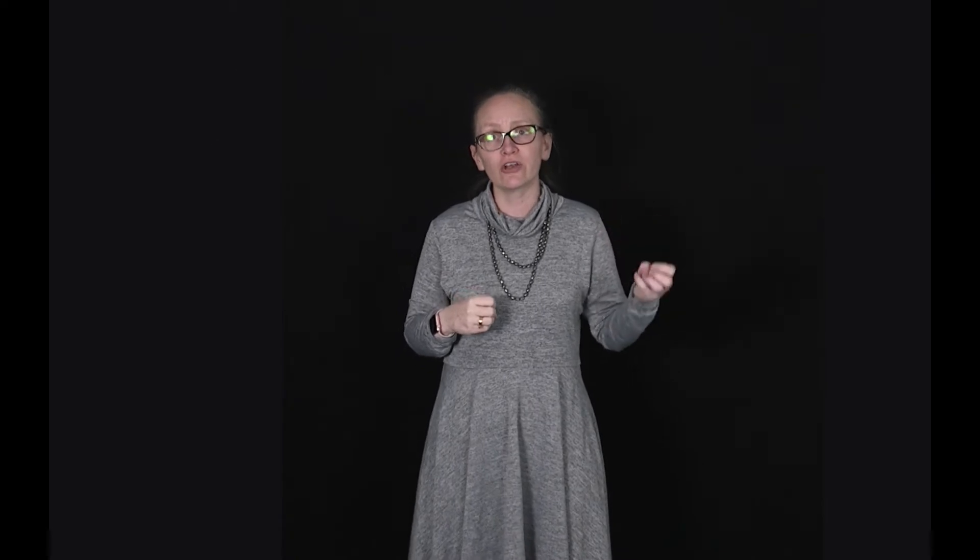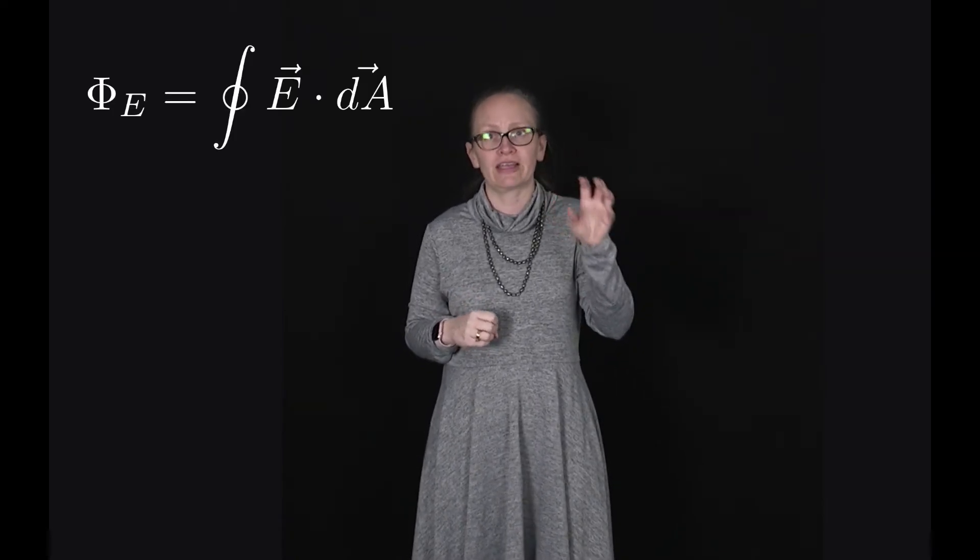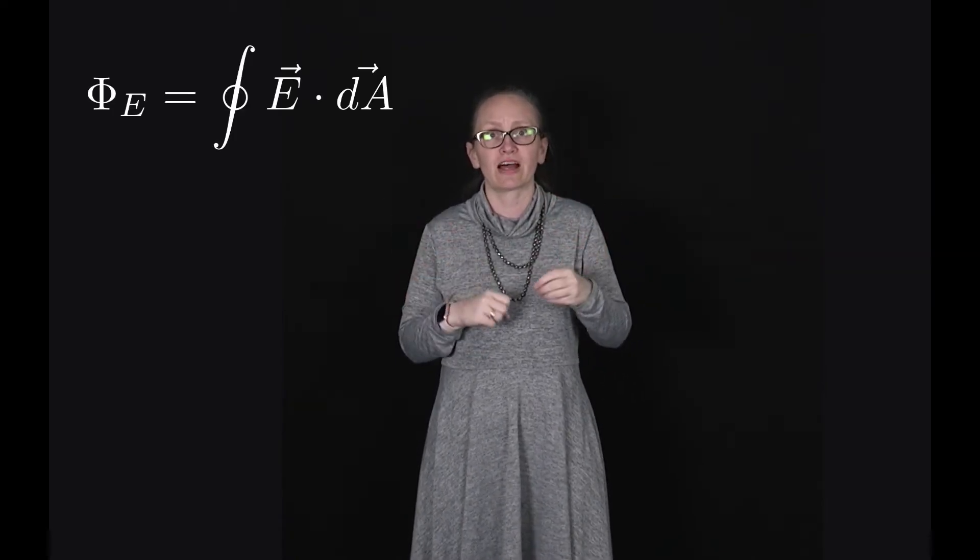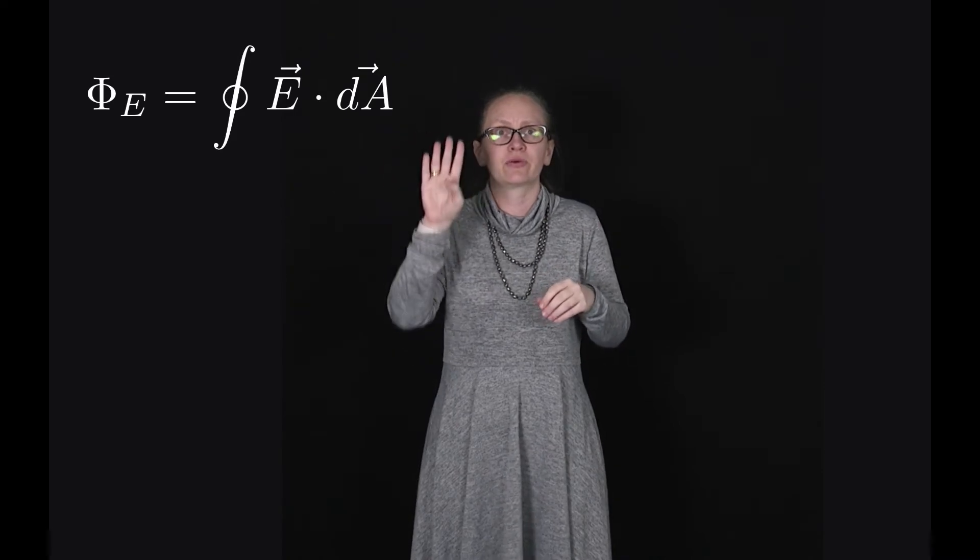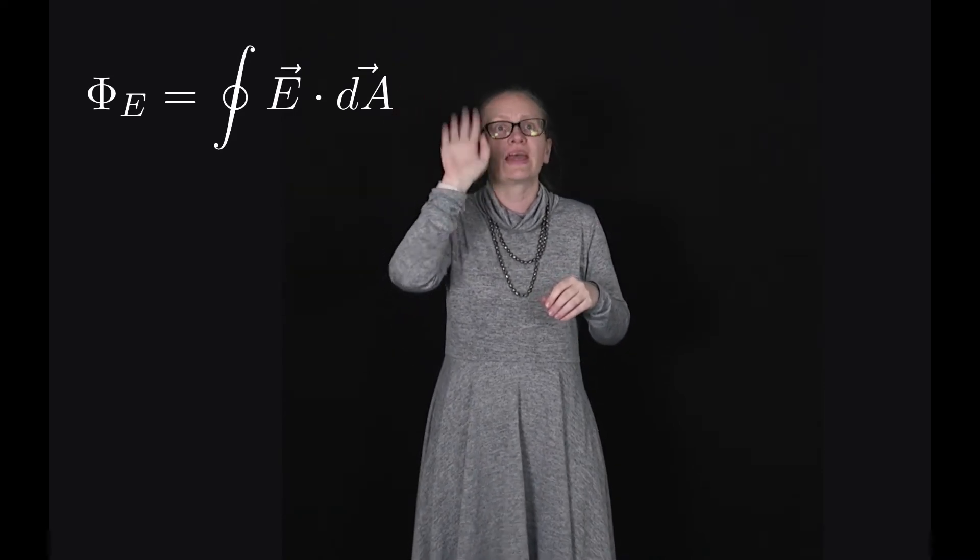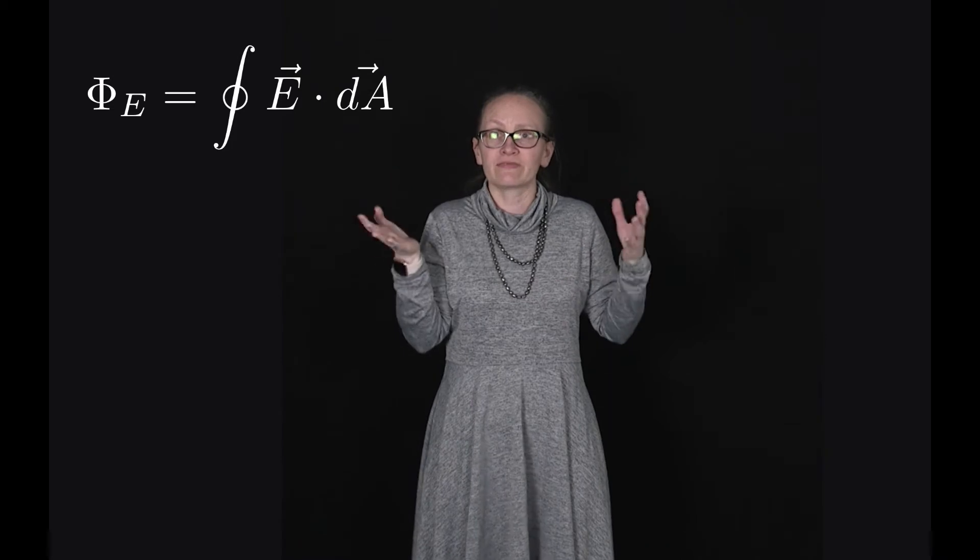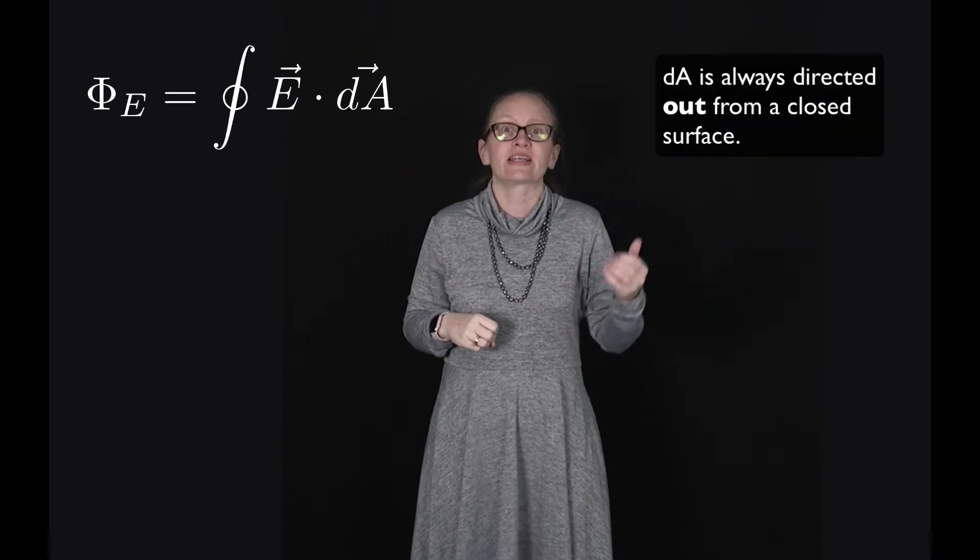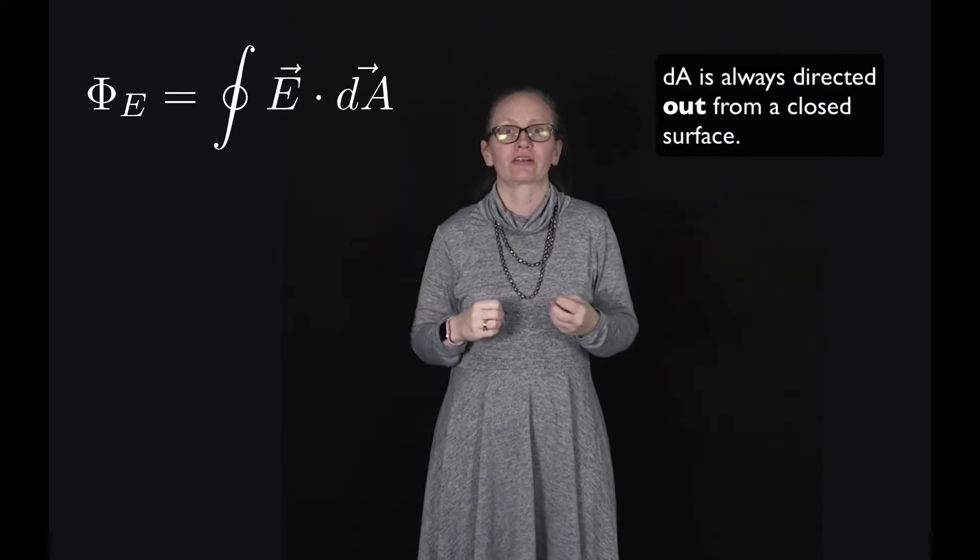Now the equation for the electric flux remains much the same, however now to show that the surface is closed we put a little circle around the integral sign. So the equation for flux becomes phi e is equal to the integral with a circle e dot dA and for a closed surface dA always has the direction out of that closed surface.